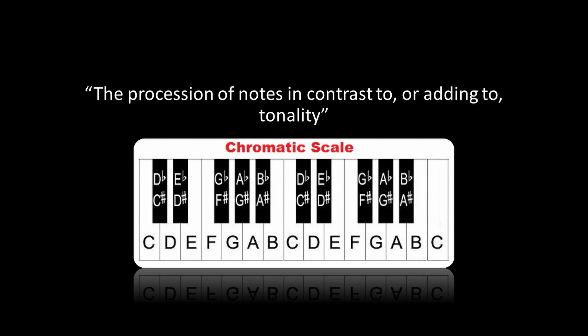Chromaticism. Chromaticism is the procession of notes in contrast to or adding to tonality. Think of a piano — chromaticism happens when playing both the black and white keys in order from left to right or right to left.